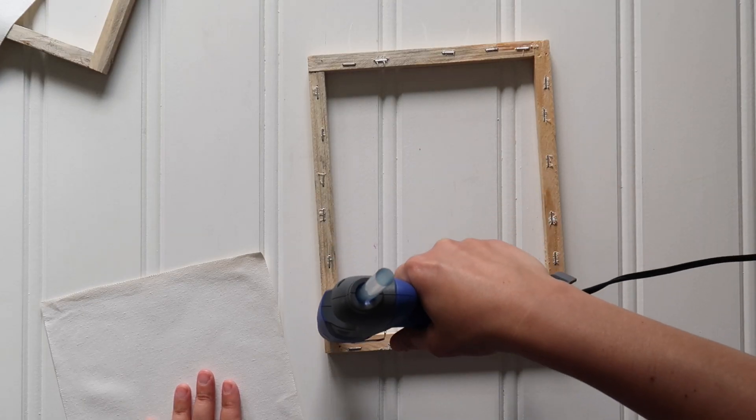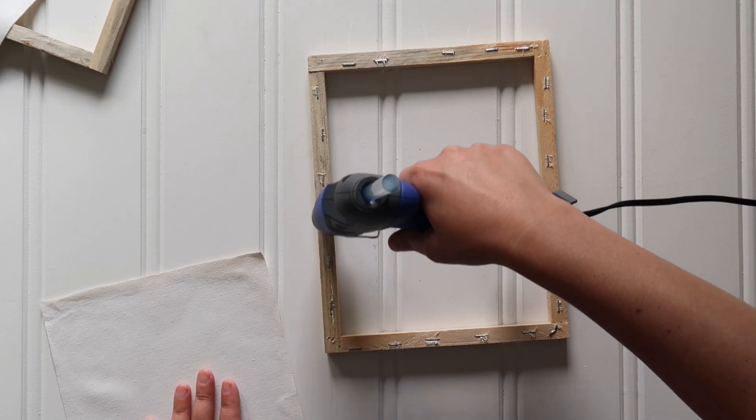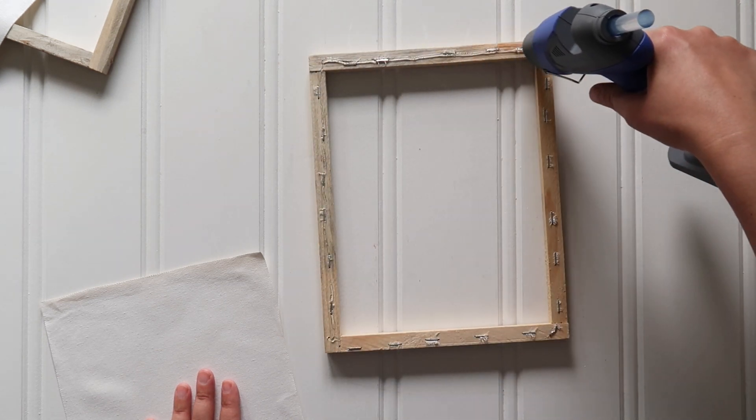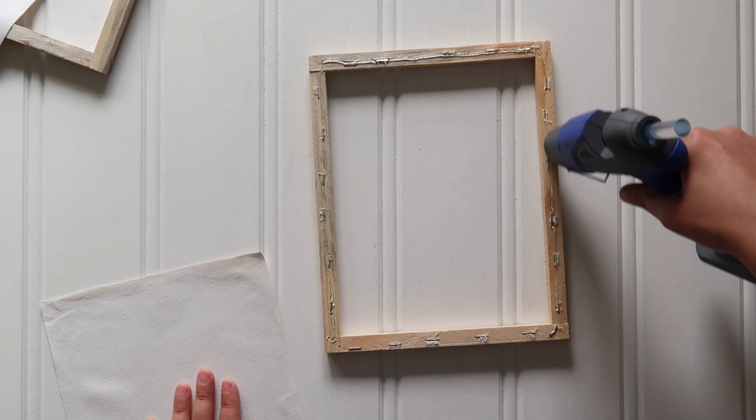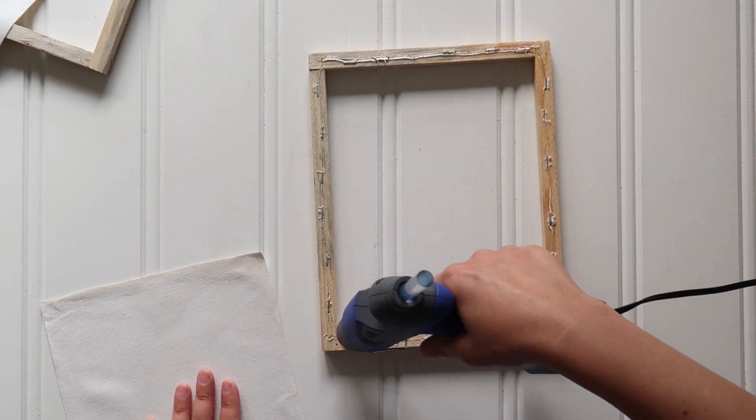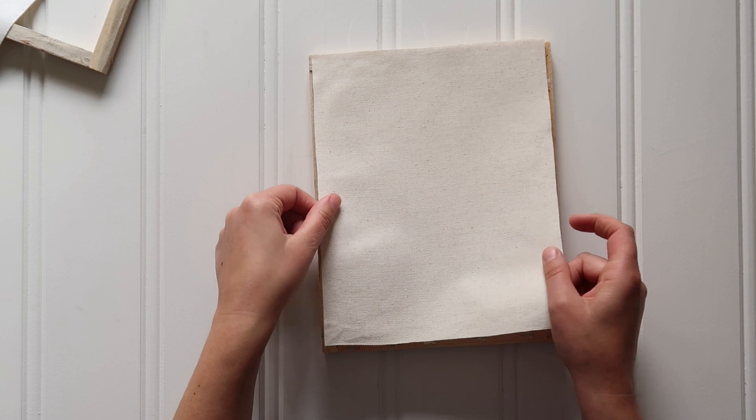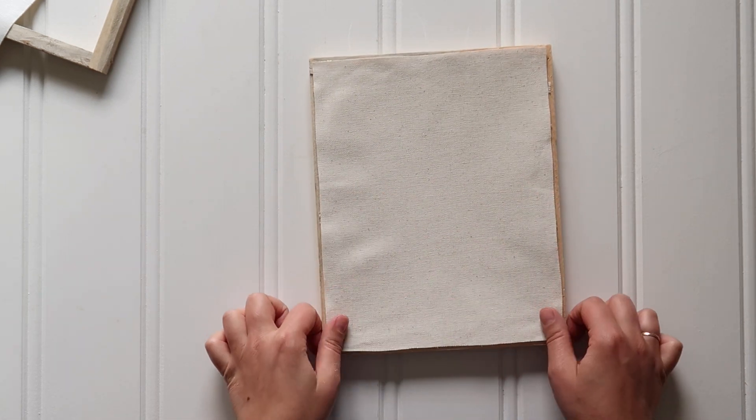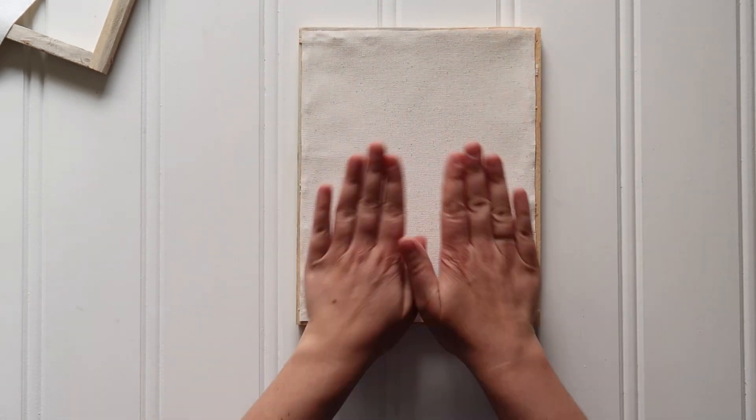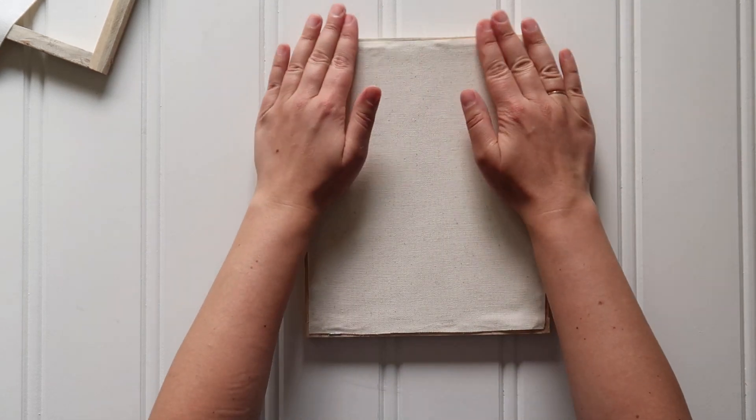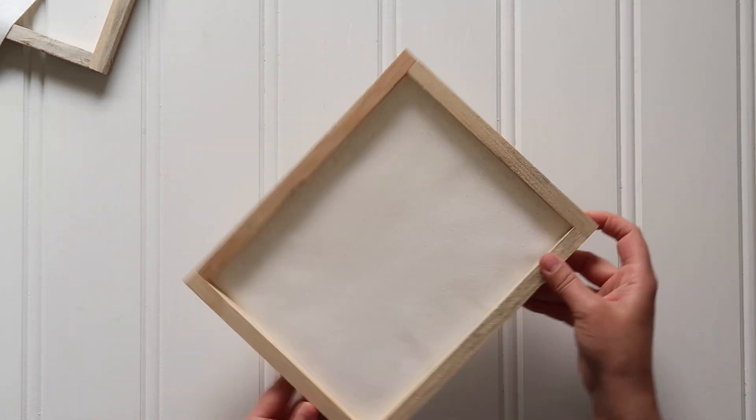From there, you want to take hot glue and hot glue all the way around the back of that little wooden frame on the staple side. I left all the staples in because I was way too lazy to remove them. If you want to, have at it, but I did not have the energy for that. Just hot glue and then add the piece of canvas fabric that has one coat of Mod Podge on it, smooth everything out, and then you've got this nice cute little blank slate.